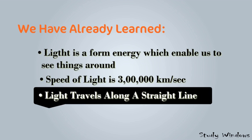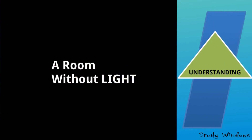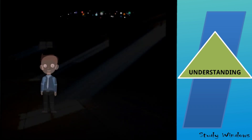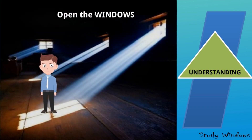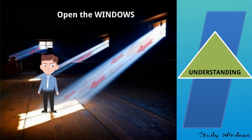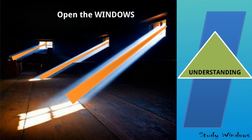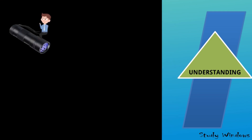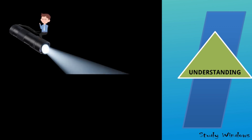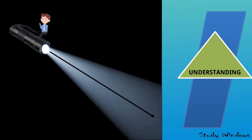Just as different things have different paths, light also has a specific path. In this chapter we will discuss how light travels and how we can prove it. If you are in a dark room and somebody opens the window, you will see light coming inside in a straight line. Similarly, if you switch on a torchlight, the light comes out straight. From these examples, we can say light travels along a straight line.